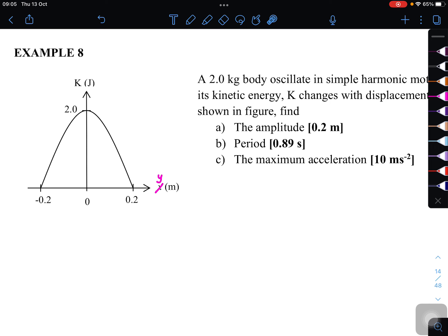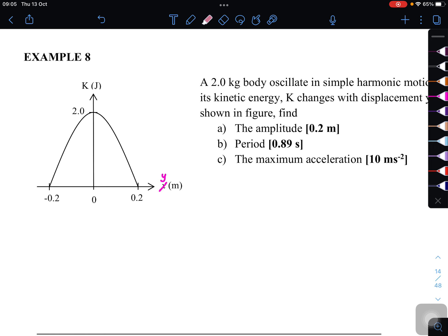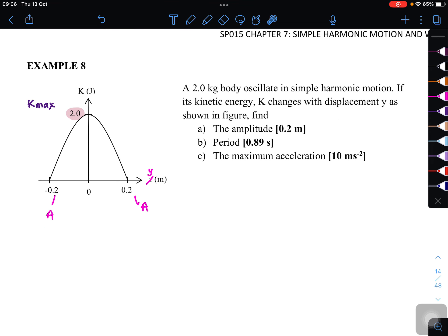Okay, so ada 2 maklumat yang kita boleh dapatkan daripada graph ni. First is the value here, represent the value for maximum kinetic energy. Sebab ni adalah value paling tinggi lah, so it will be the maximum kinetic energy. And then the 2 value here is the value for amplitude. One positive, one negative.